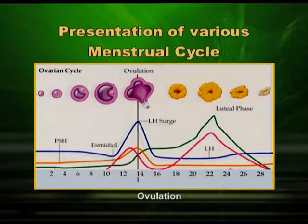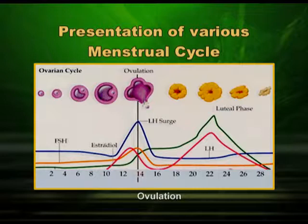Until it becomes fully mature, we call it the Graafian follicle, and this takes around 14 days. FSH comes from the anterior pituitary, acts on the ovarian follicles, and the immature follicle becomes mature under its influence. This mature follicle is called the Graafian follicle, and it becomes the source of estrogen — one of the two sex hormones in the human female.